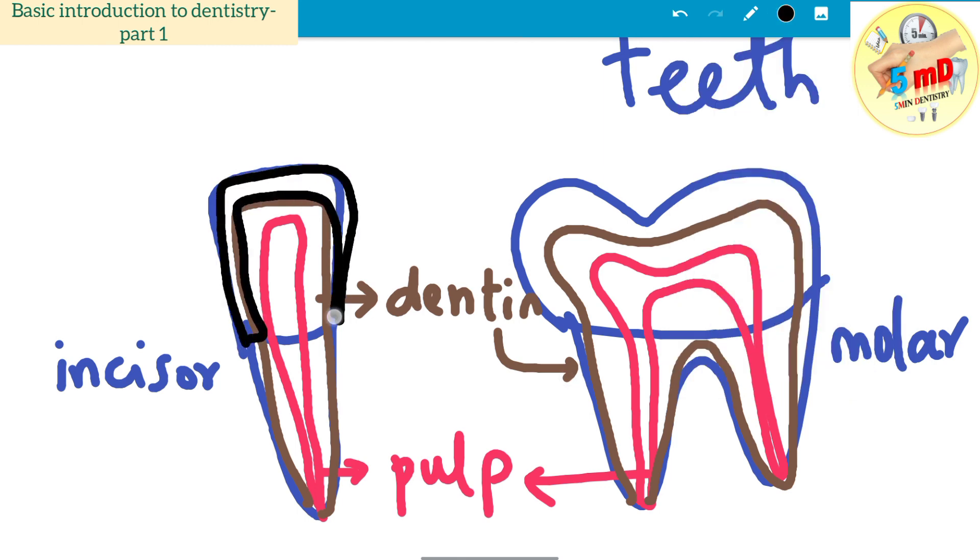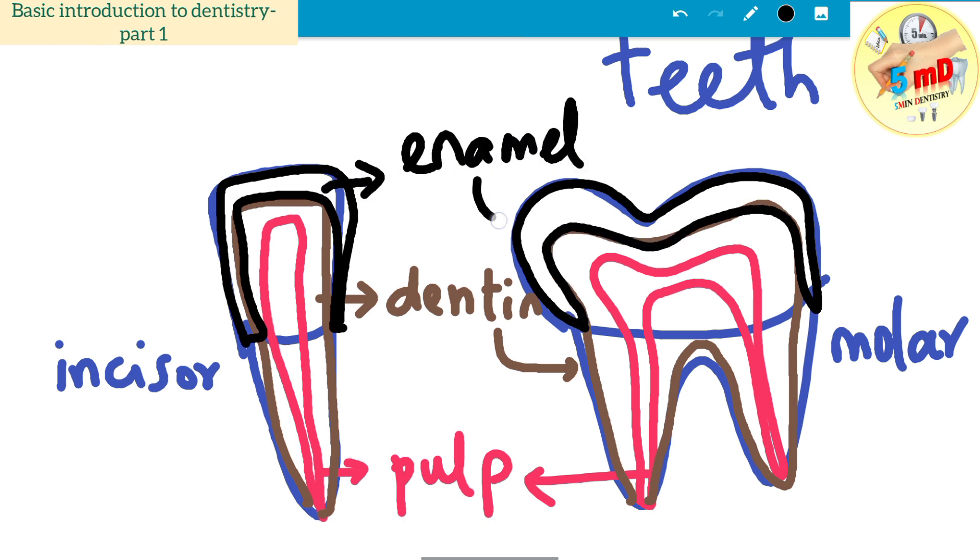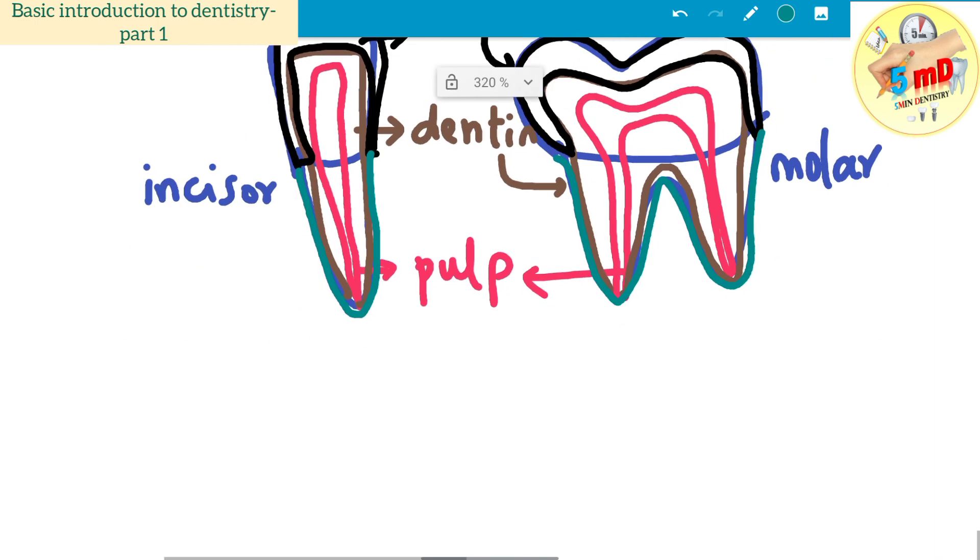The third outermost layer is the enamel. This is the hardest substance present in your body, the most calcified structure. Similar to enamel, the roots are covered with a thin layer of cementum, which is not as hard as enamel.